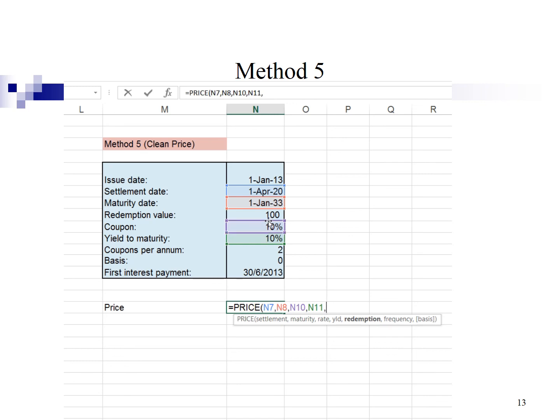Point the redemption value of 100, comma, point the basis. Here I assume the basis is 0. You can refer to Excel for the various definition of basis. Close bracket. Enter. And this is the value of the bond price.